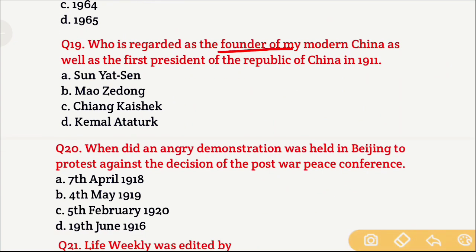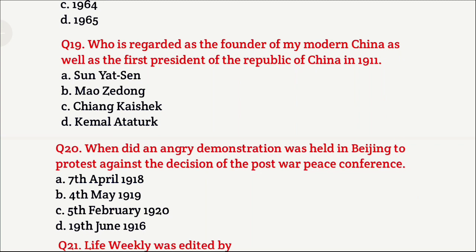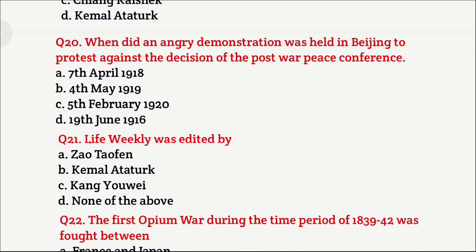Question 19: Who is regarded as the founder of modern China as well as the first president of the Republic of China in 1911? Option A is Sun Yat-sen, Option B is Mao Zedong, Option C is Chiang Kai-shek, and Option D is Kemal Ataturk. The right answer is Option A, which is Sun Yat-sen.